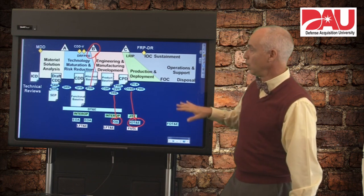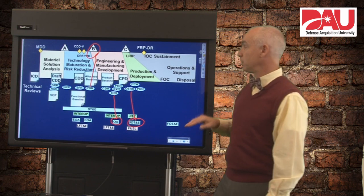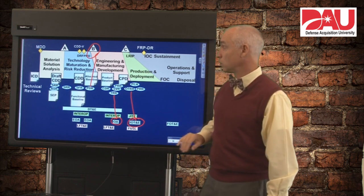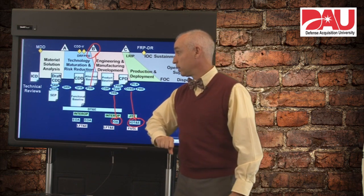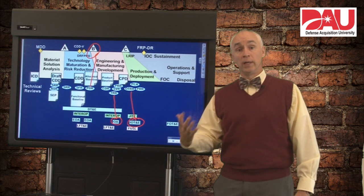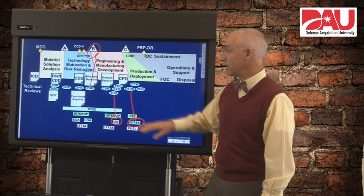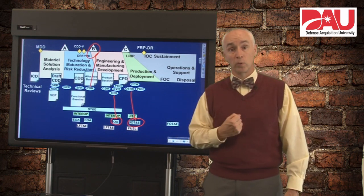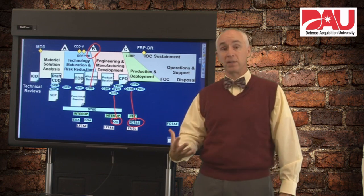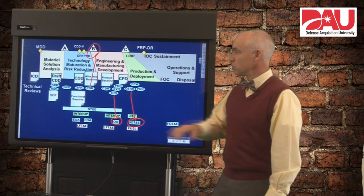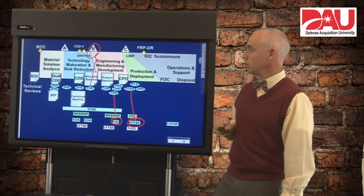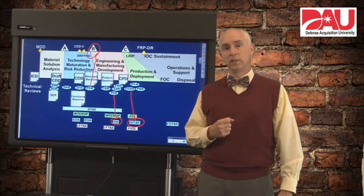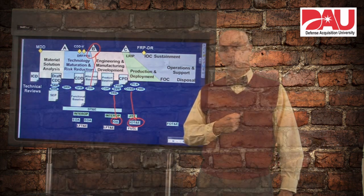Recall where we establish each of these baselines: a functional baseline is established at the System Functional Review; we allocate those functions across the system and establish an allocated baseline at the Preliminary Design Review; and we finish detailed design work by the Critical Design Review, where we approve our produce-to specifications and establish the product baseline. This lays out our technical reviews and how they are aligned with each of the decisions across our lifecycle. I hope this has been helpful — thank you for tuning in.